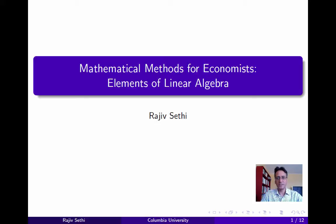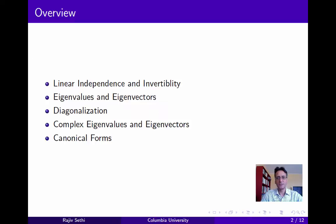In this segment, we'll go over some basic results in linear algebra as a prelude to our discussion of dynamical systems. We'll begin by discussing the linear independence of vectors and the invertibility of matrices, then talk about eigenvalues and eigenvectors. We'll see how to diagonalize a matrix using its eigenvectors, provided all eigenvalues are real and distinct, then discuss the case of complex eigenvalues and eigenvectors, and show how these can transform a matrix into a simpler canonical form. These transformations are enormously useful in the analysis of dynamical systems.